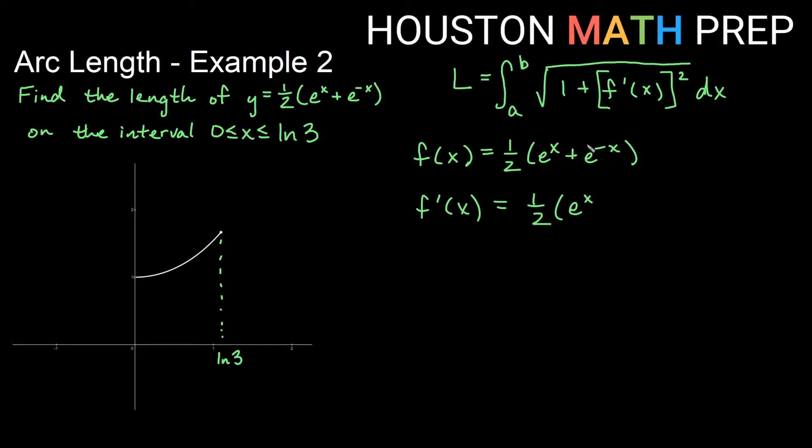And the derivative of e to something is itself. So if I say plus e to the negative x, but the chain rule actually gives us a negative one multiple here. So we will actually get that our f prime of x is one-half e to the x minus e to the negative x here, and that's our f prime.